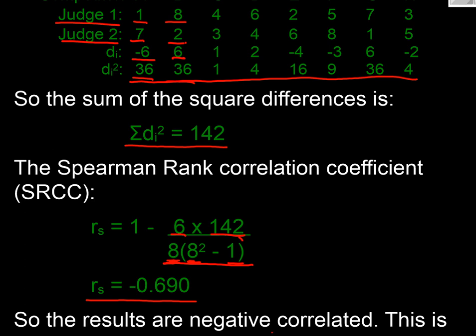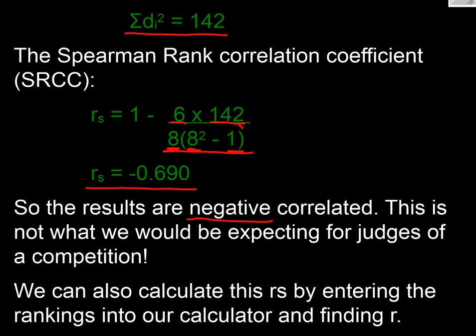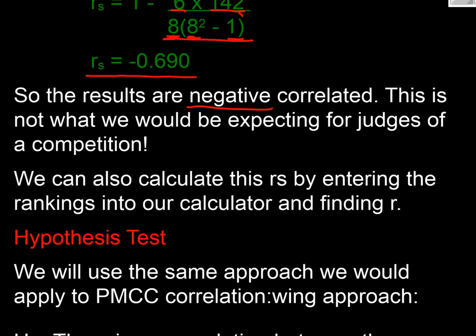So that would suggest that our results are negatively correlated, wouldn't it? That the judges actually have a different view on who's the best, and they almost got opposite views there, haven't they? And we wouldn't really be expecting that, would we? We need the judges to be consistent. Please note we can also calculate exactly what we've just done by putting the results into our calculator.